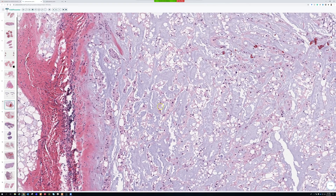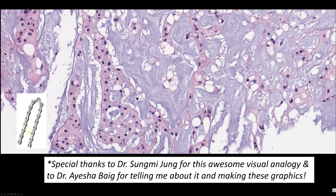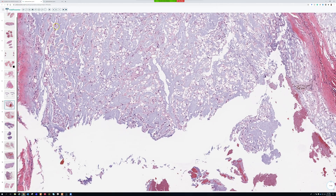The bicycle chain analogy for chordoma cords is really cool — it kind of loops around. I want to give a shout-out: while explaining the chains and cords of chordoma to McGill residents, I learned from Dr. Aisha Baig that their soft tissue mentor Dr. Sungmi Jung likens the curving cord shape of chordoma cells to a bicycle chain. You can see these bulging expansions along the cord that wrap around just like a bicycle chain. Thanks to Dr. Jung and Dr. Baig for sharing this visual tip and for compiling these beautiful photographs.